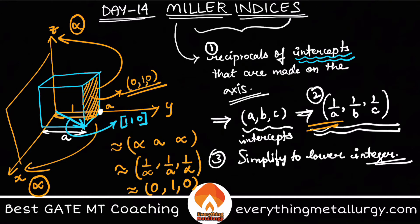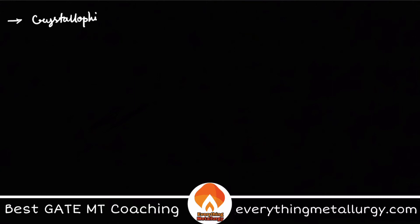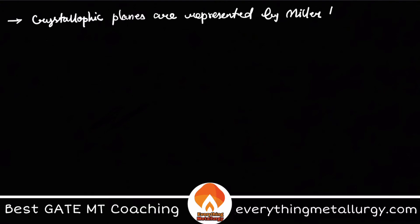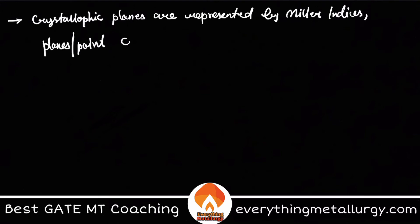So an important distinction: crystallographic planes are represented by Miller indices, whereas crystallographic directions or points can be represented by vectors. This is an important thing to remember.